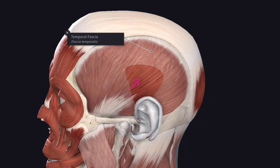In the upper part the fascia presents as a single layer and it is attached to the superior temporal line. In the lower part it splits into two layers and is attached to the outer and the inner lip of the upper margin of the zygomatic arch.